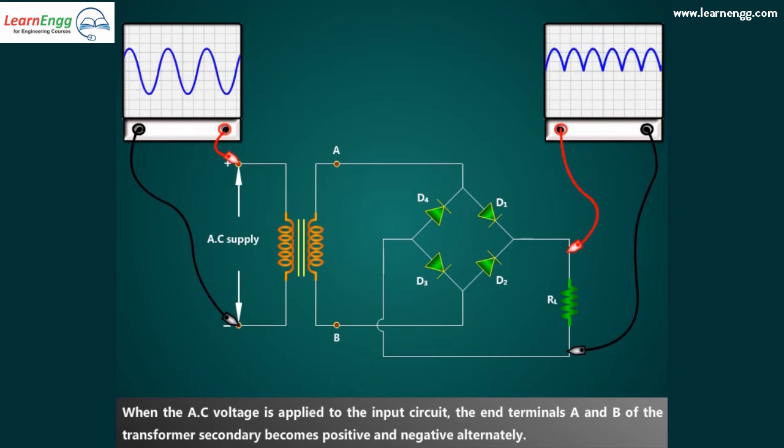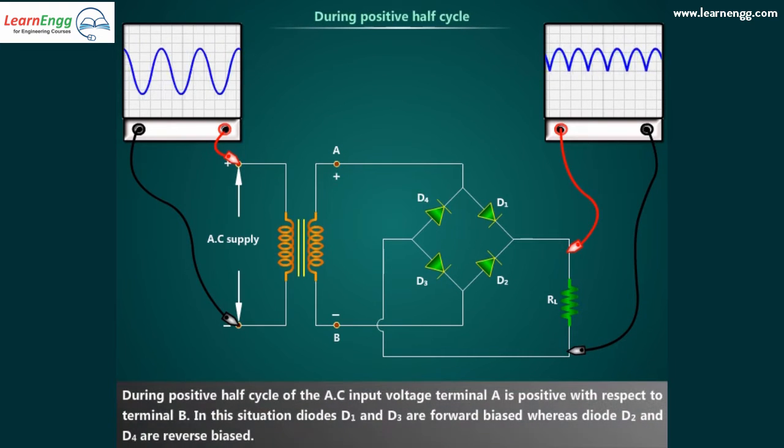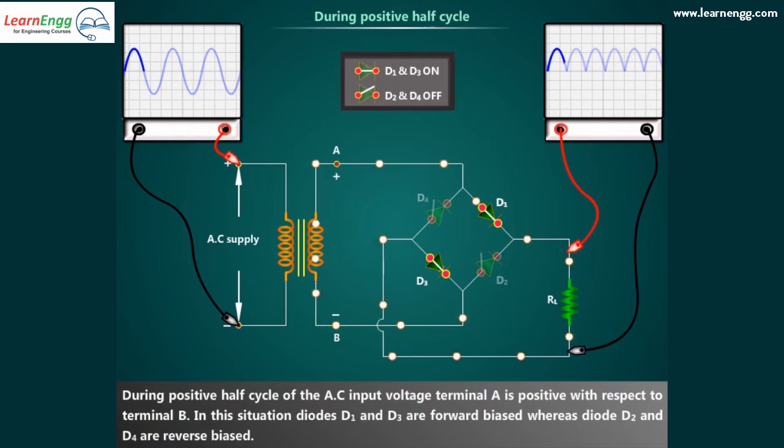When the AC voltage is applied to the input circuit, the end terminals A and B of the transformer secondary becomes positive and negative alternately. During positive half cycle of the AC input voltage, terminal A is positive with respect to terminal B.